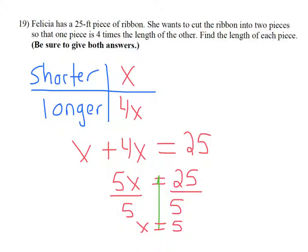That tells me that the shorter piece x is 5 feet. Don't forget to put the label on.